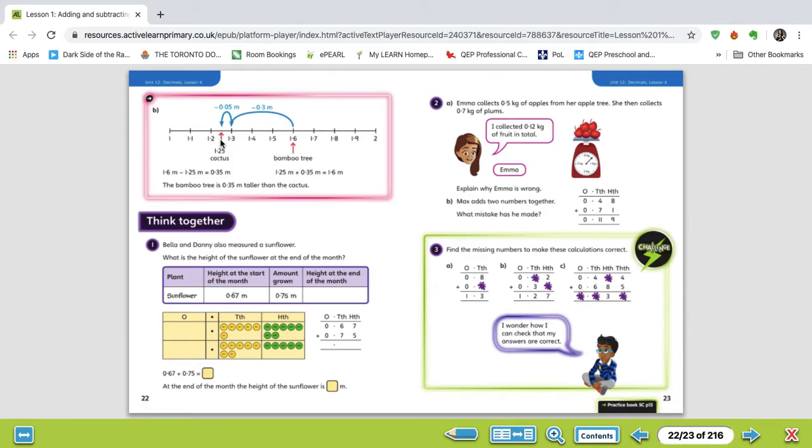So if you're struggling with subtracting hundredths from tenths, always know that you can use a number line to go to the nearest tenths and then subtract that, try to get as close as you can to the hundredths place. So the bamboo tree is 0.35 meters taller than the cactus, because that was the total difference.